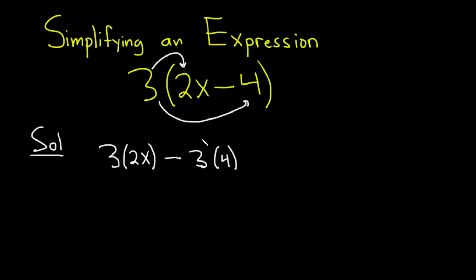Okay, so it's called the distributive property of multiplication. So this is equal to, let's see, 3 times 2 is 6, we just get 6x. And then minus 12, because 3 times 4 is 12.